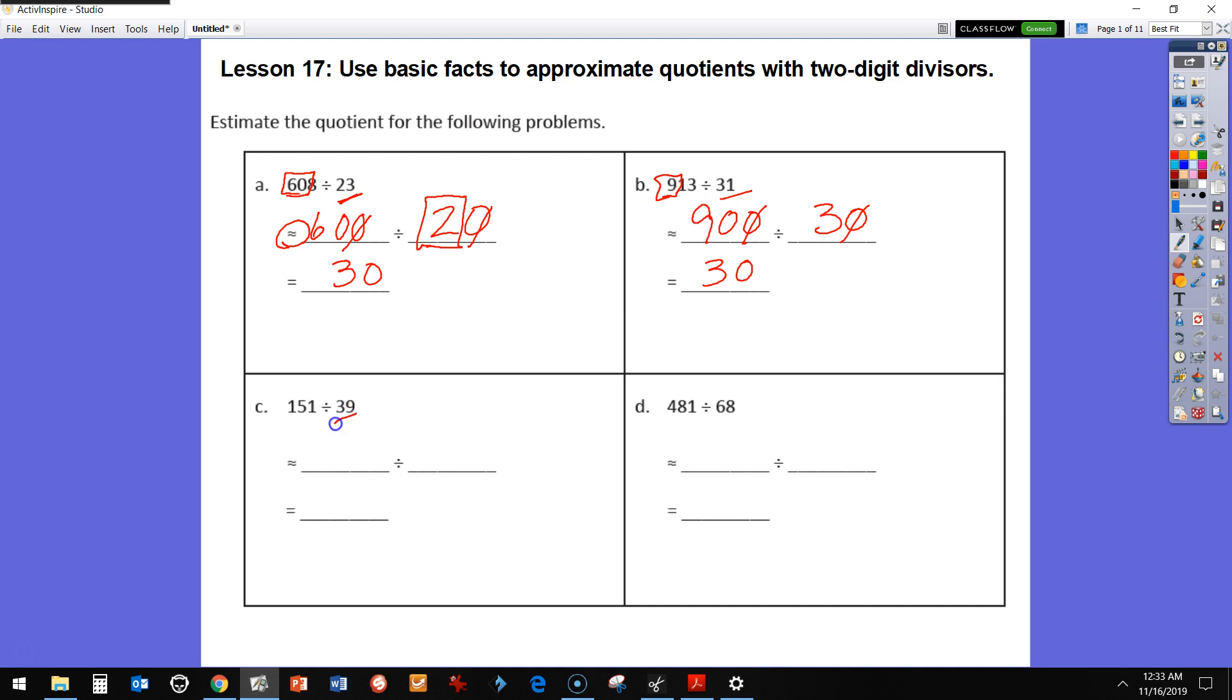All right, moving on to C. I see C as 39 as a divisor. So I'm going to just round up to 40 for my divisor and I need something that's a multiple of four. So a multiple of four, 15 is not a multiple of four.